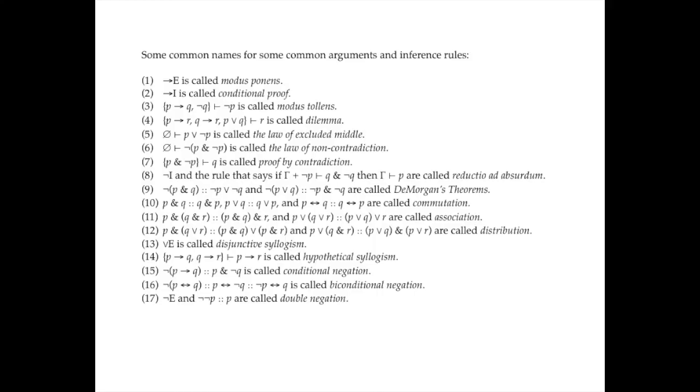On the screen now is a bunch of new vocabulary — common names that logicians and philosophers use for very common arguments and inference rules. For example, our arrow-elimination rule is usually called modus ponens, and our arrow-introduction rule is usually called conditional proof. These are good things to know; they'll make it much easier to understand how philosophers and logicians talk about these argument types. That's all I wanted to cover for today — let me know if you have any questions or trouble with the problems, and I'll see you in my next video.